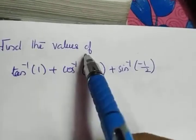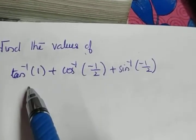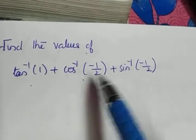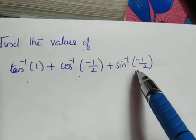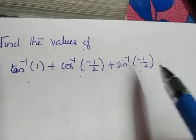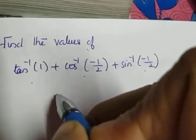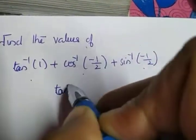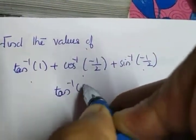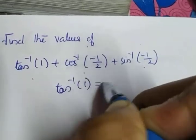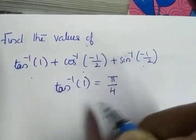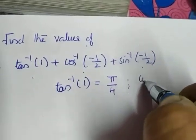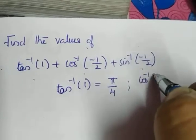The next question is to find the values of tan inverse of 1, cos inverse of minus 1 by 2, and sin inverse of minus 1 by 2. We will deal with each one. Tan inverse of 1 is pi by 4.